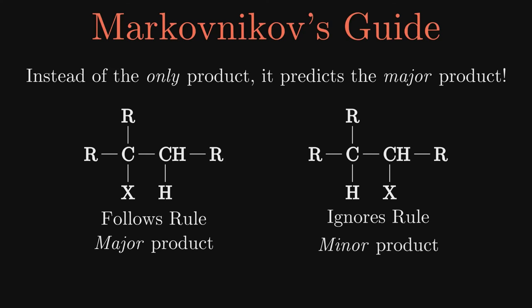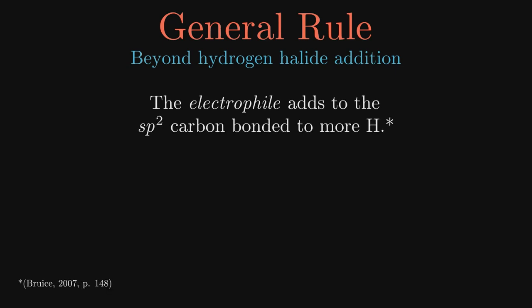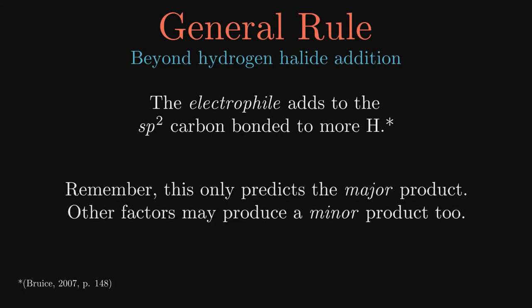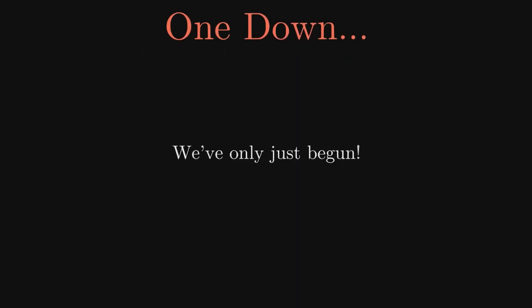However, modern understanding has provided us with a more general rule. The electrophile adds to the sp2 carbon bonded to more hydrogens. Keep in mind there are other factors that may result in major and minor products. Having a general rule is good for us to know as we continue our journey into the reactions of the alkenes.